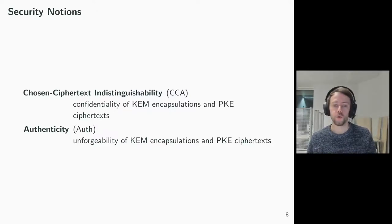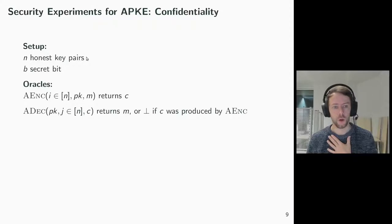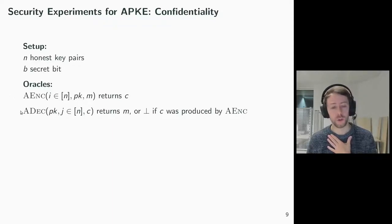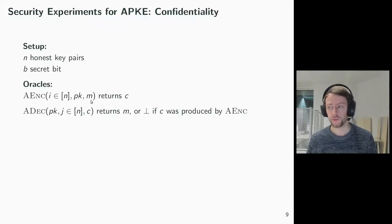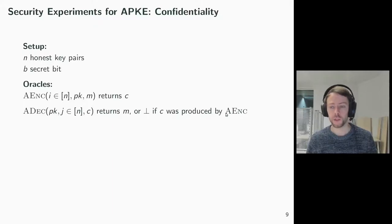In the following we will dive into the security games for APKE and ACAM. Let's begin with confidentiality for APKE. We set up the game with n honest key pairs, which means we consider a multi-key notion. Also, we choose a random secret bit B. The adversary gets access to an encryption and a decryption oracle. For the encryption oracle, it can choose the index of an honest sender key pair, then an arbitrary receiver public key and a message. The oracle returns the ciphertext computed by the encryption function. For the decryption oracle, the adversary can choose an arbitrary sender public key and the index of an honest receiver key pair and the ciphertext. The oracle refuses the query if the ciphertext was produced by the encryption oracle; otherwise it returns the plaintext computed by the decryption function.